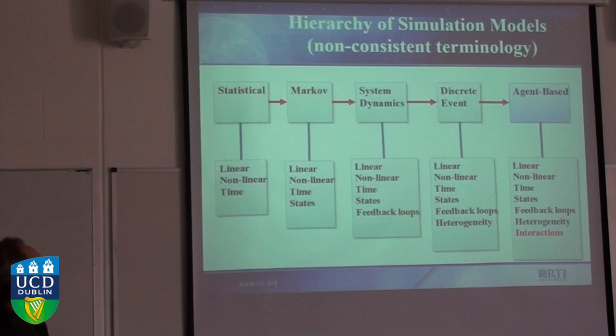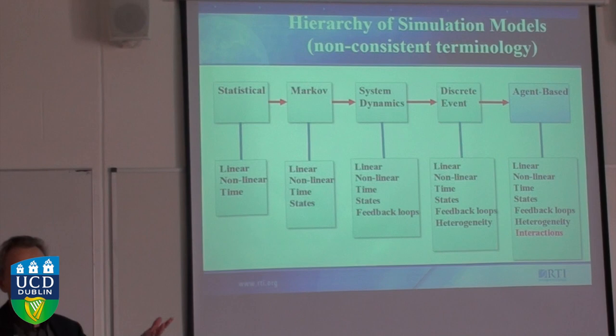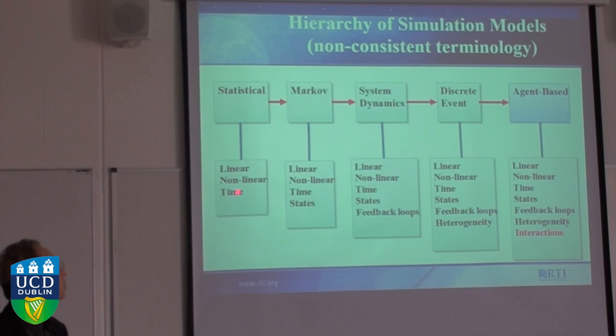With statistical models we have statistical equations — they could be linear or non-linear, for example regressions. You can use regressions to make predictions: if you change the X variable, you can estimate how much change you will get in the response variable. You can also add non-linear terms and time, giving you time series models.